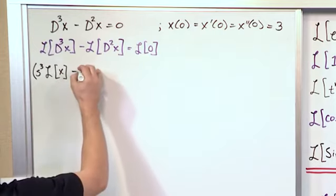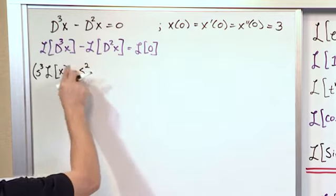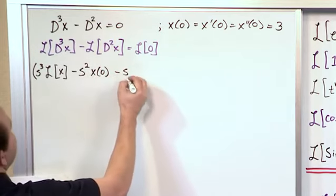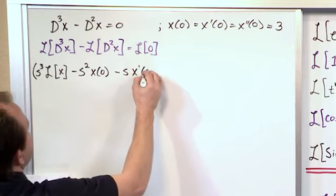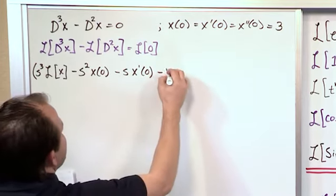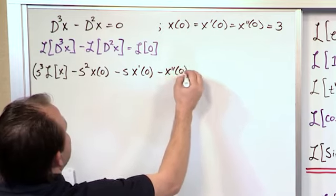Then you have your Laplace transform. Then you go down one power in s, and then you have the initial condition. And then you go down another power of s, and you have the first derivative. And then you go down another power of s, which means it disappears. And then you have the second derivative, all evaluated at zero.